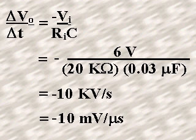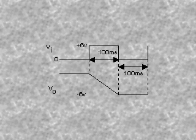The output is a negative-going ramp. When the input is at zero volts, the output is constant. In 100 microseconds, the voltage decreases. Thus, the negatively sloped ramp arrives at minus 6 volts at the end of the pulse. The output voltage is constant at minus 6 volts for the time the input is zero. The resulting waveform is now shown.